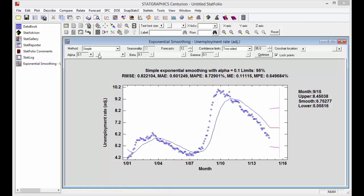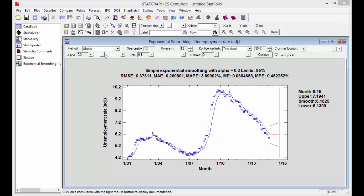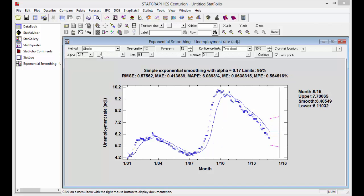We can change the value of alpha using the slider on the statlet toolbar. You'll notice that as I change the value of alpha, the mean absolute percentage error changes. In fact, it looks like larger values of alpha give smaller error statistics.